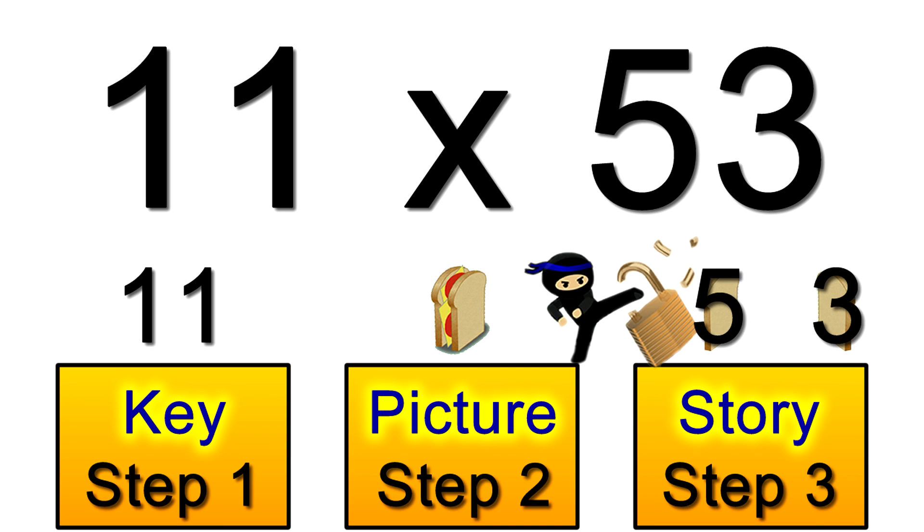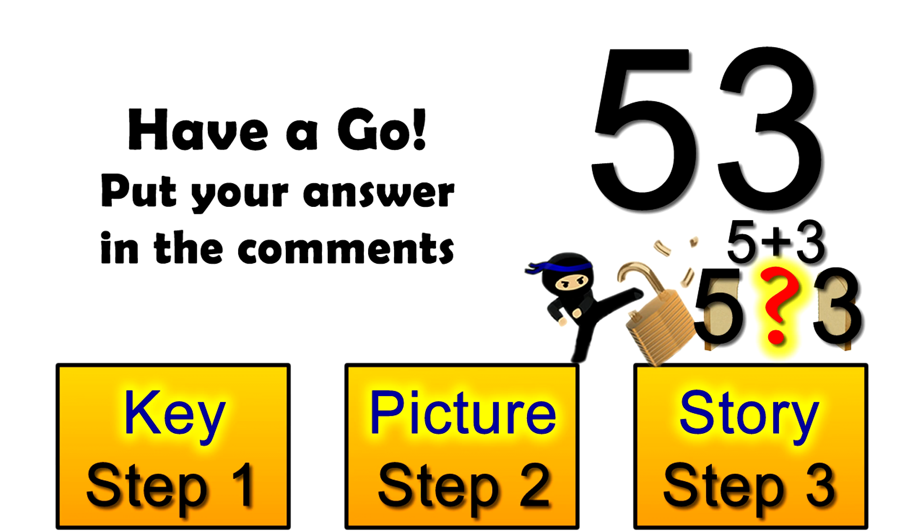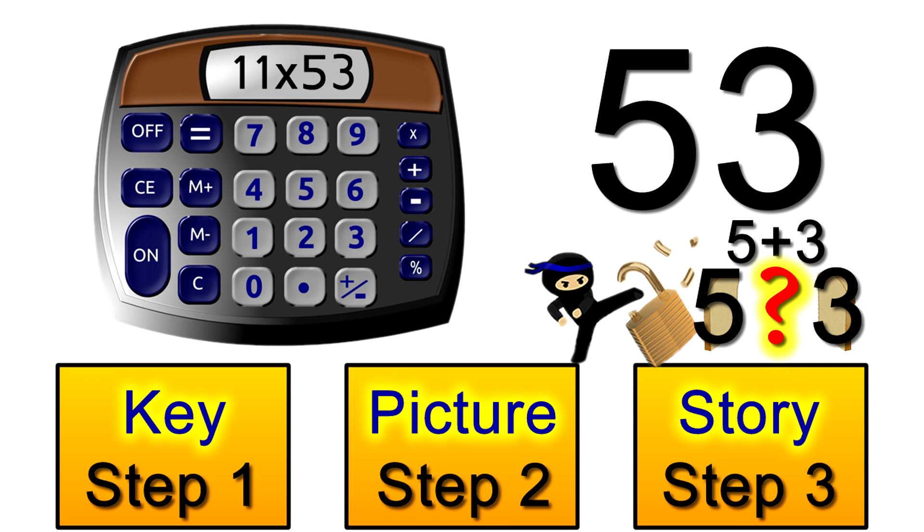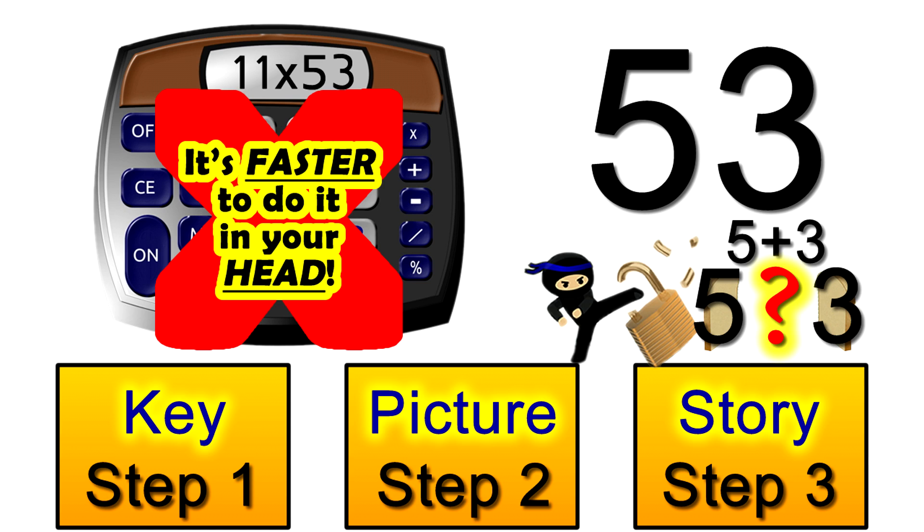Which you could now work out in a flash in your head even if you never saw that problem before in your life. In step 1 you'd spot that 11 is the key. In step 2 you'd remember that the 11 looks like a sandwich. And in step 3 you'd simply make a sandwich using the 5 and 3 on those two slices of bread. The story leads you to simply create the filling to put in the middle by adding those two numbers together. Go on why don't you see if you can do that right now and pop your final answer down in the comments below.